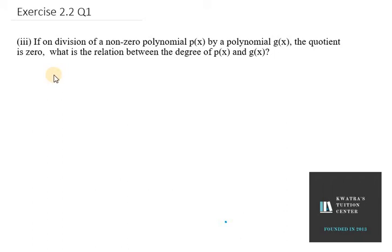Hello everyone, let's start with question number 1, third part. If on division of a non-zero polynomial P(x) by a polynomial G(x), the quotient is 0. Note that non-zero polynomial means it has some term, and by a polynomial G(x), the quotient is 0.